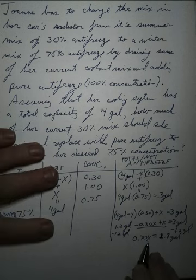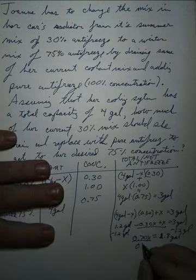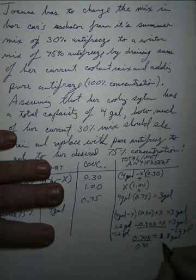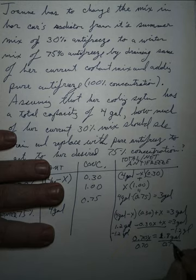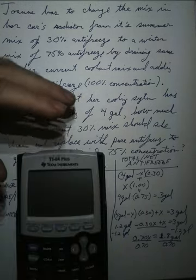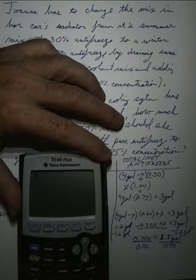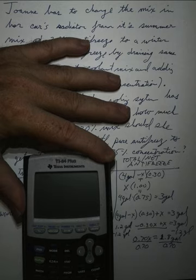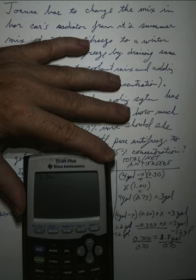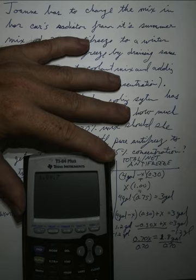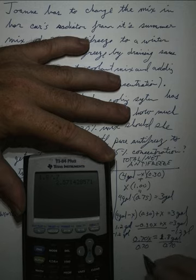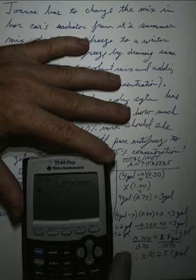At this point, to solve for x, we're going to divide by 0.70. This is not going to come out a nice, even, round number, so might as well use our calculator for this. Turning our calculator on, we're going to take 1.8 gallons and divide by 0.7. We're dividing by a number less than 1, so we should get something bigger than 1.8. Divide by 0.7, I get about 2.57, is about equal to 2.57, and that's gallons.